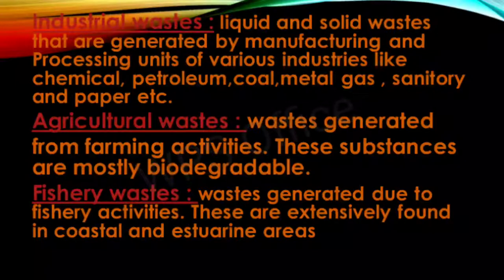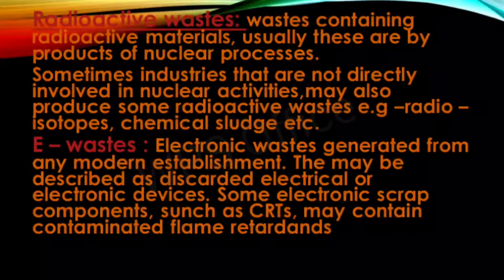Industrial waste comes from industries like chemical, petroleum, coal, metal, gas, sanitary, and paper industries. Agricultural waste is generated from farming activities and is mostly biodegradable. Fishery waste is generated from fishery activities and is extensively found in coastal and estuarine areas. Radioactive waste contains radioactive materials, usually as by-products of nuclear processing. Sometimes industries not directly involved in nuclear activities may also produce radioactive waste — examples include radio isotopes and chemical sludge.